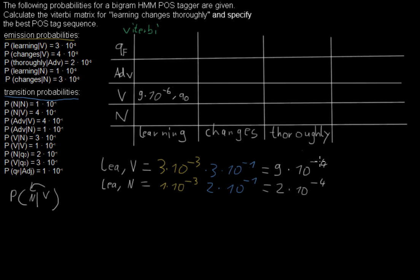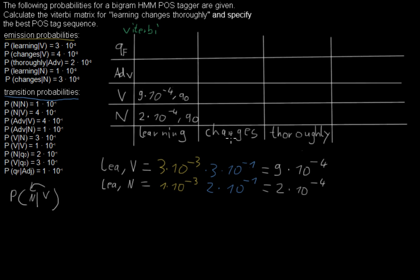You might notice that the noun probability (2×10⁻⁴) is much higher than the verb probability (9×10⁻⁶), and you may want to just keep that. But when we go to the next column, it could be that this probability is multiplied by a very small number and the other one by a very large number, so maybe the verb leads to the best sequence. We cannot say yet and have to keep both. So the probability that 'learning' is a noun is 2×10⁻⁴, coming from the beginning.